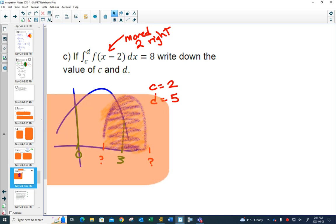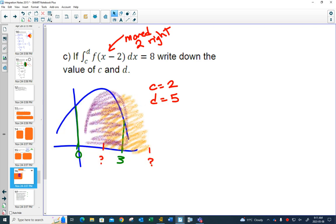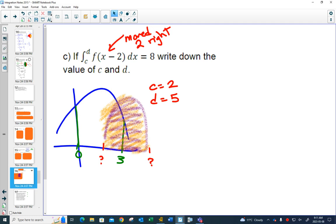So the answer is, if your original area here was 8 and you move the graph 2 units to the right and it still would be 8, does it make sense that it would have to go from 2 to 5?